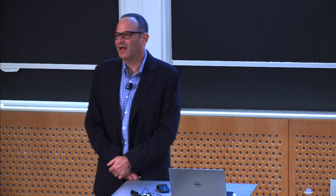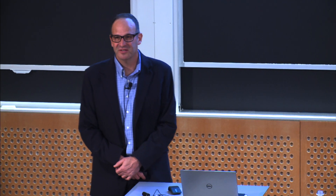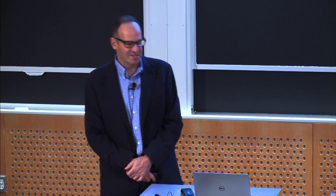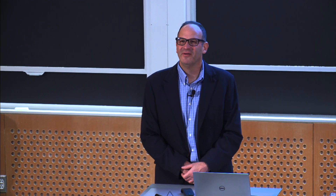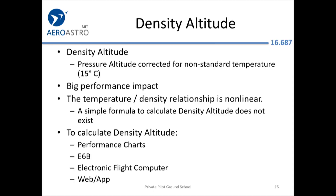Density altitude is a lot more important, and often it will be reported on the ASOS or ATIS — the airport will actually tell you the density altitude. You get that by correcting pressure altitude for non-standard temperature. Flying is more popular in New England in the summertime, so it's usually warmer than standard. Density altitude has a huge effect on performance, and it's a non-linear relationship, so you have to look it up in a table or calculate it with the E6B.